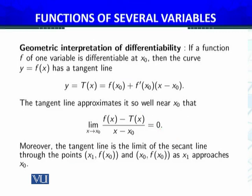Moreover, the tangent line is the limit of the secant line through the points (x₁, f(x₁)) and (x₀, f(x₀)). Here x₁ should be written - x₁, f(x₁) and x₀, f(x₀). Then the secant line passes through these points as x₁ approaches x₀.